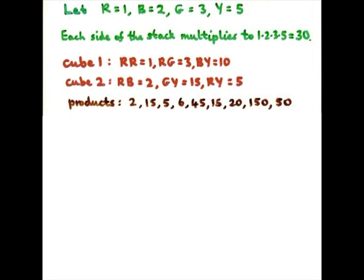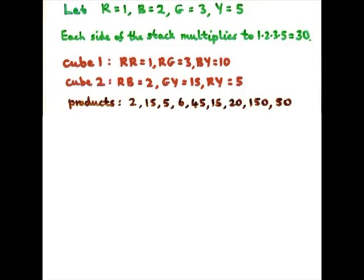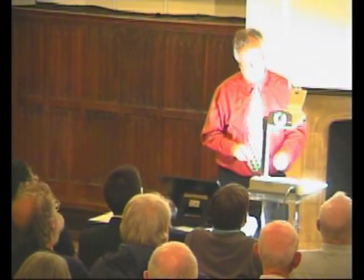I get 1 times 2, 1 times 15, 1 times 5, 3 times 2, 3 times 15, 3 times 5, 10 times 2, 10 times 15, 10 times 5. These are the possible products I get for the first two cubes. We don't know which of them is going to work. But this is what we've got.